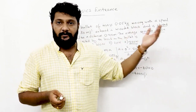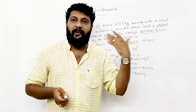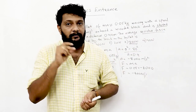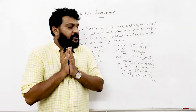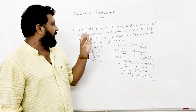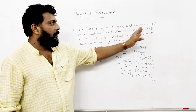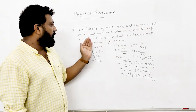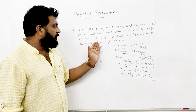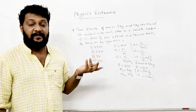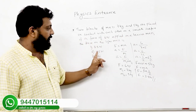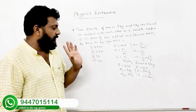Two blocks of mass 7 kg and 5 kg are placed in contact with each other on a smooth surface. If a force of 6 N is applied on the heavier mass, the force on the lighter mass — options are 3.5 N, 2.5 N, 7 N, 5 N.